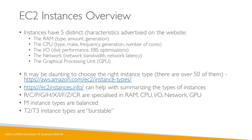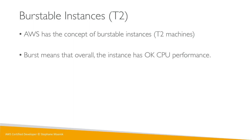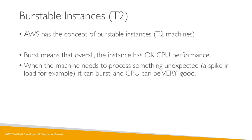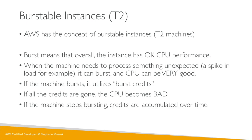Then we have T2 and T3 — burstable instance types. The most common is T2 micro because it's free, which is what we've been using. Burstable instances have overall okay CPU performance, but when the application needs to process something unexpected, the CPU can burst and become very, very good. When the machine bursts it uses something called burst credits, and when all credits are gone the CPU becomes very bad. Once the machine stops bursting, credits accumulate back over time.